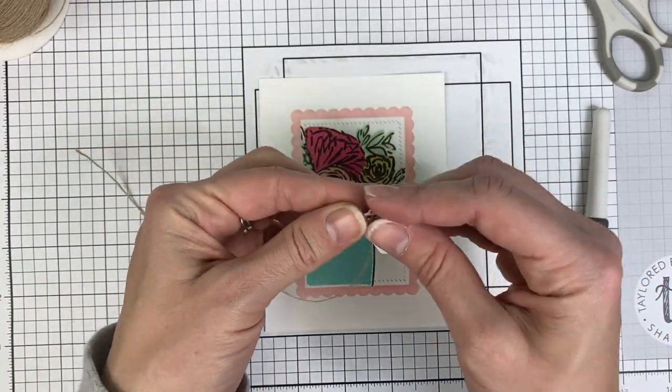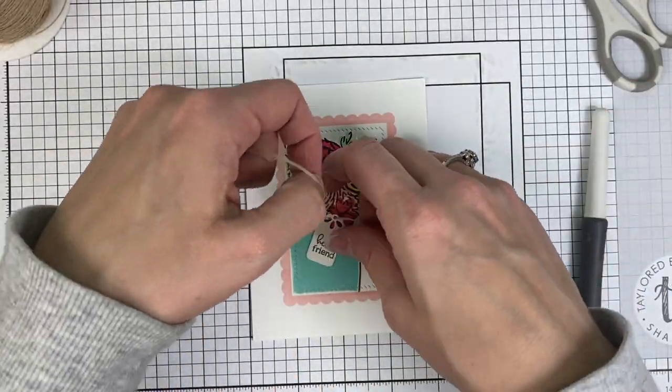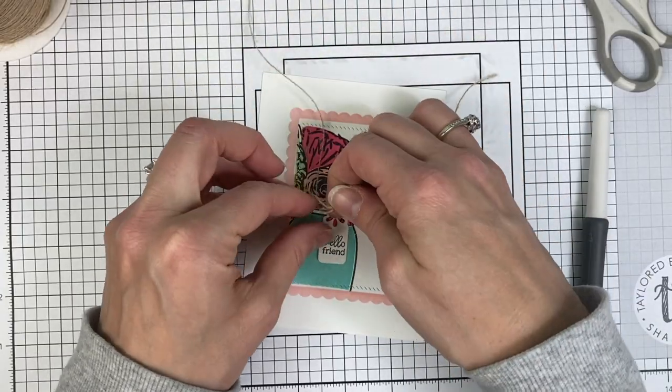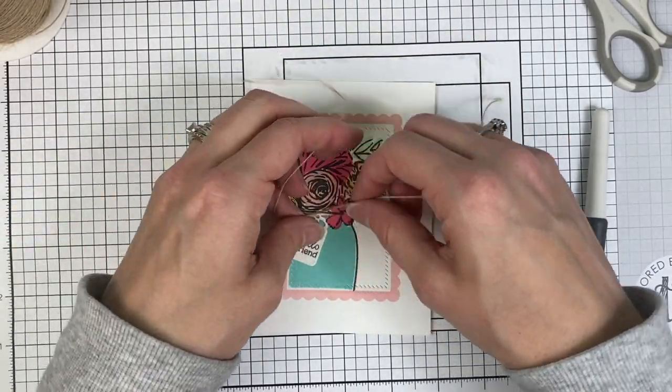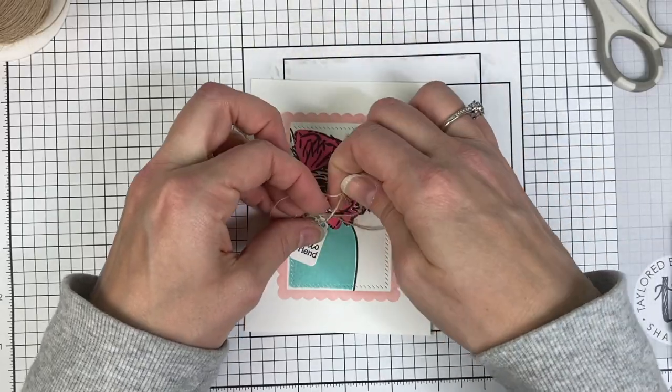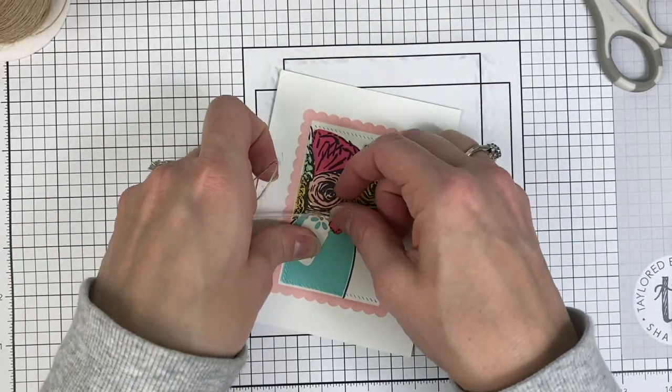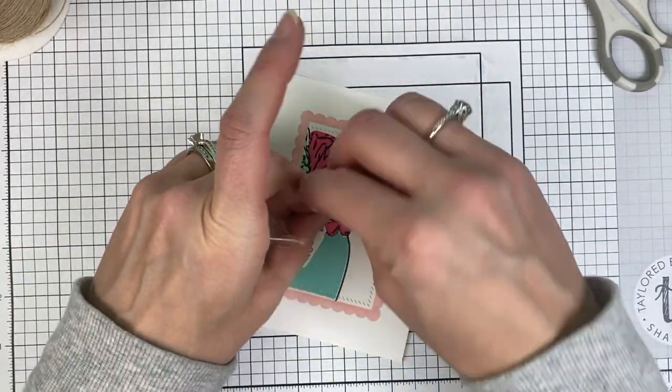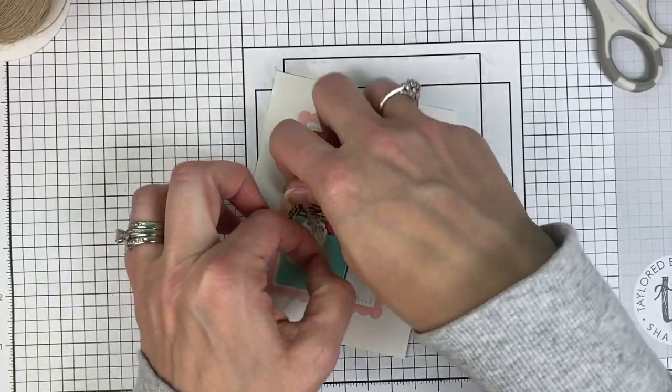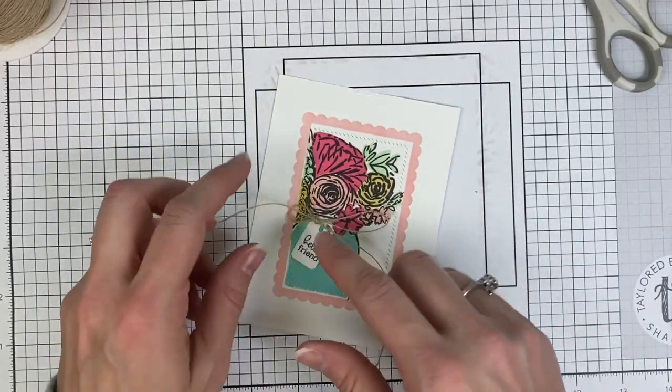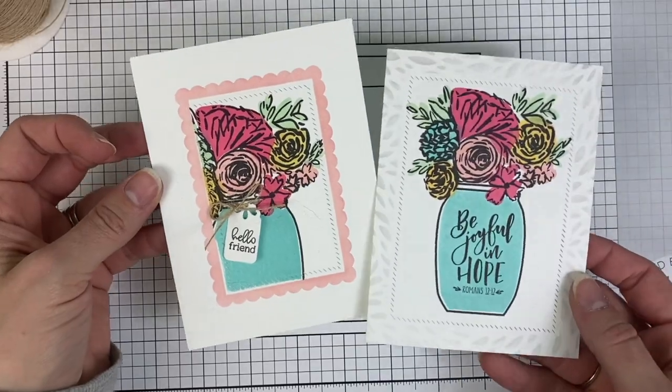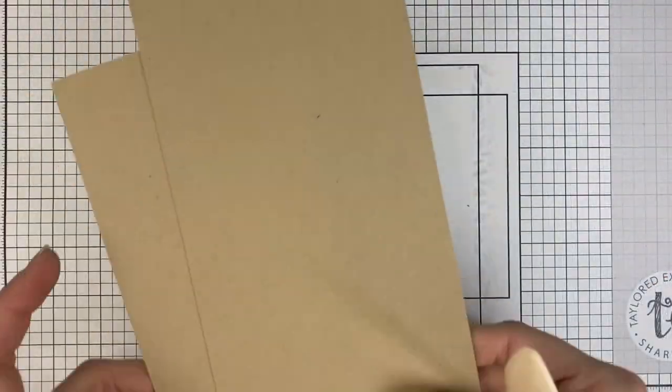The sweet little tag adds a lot of dimension to this really simple project. With the Itty Bitty Sentiments stamp set, you have over 40 sentiments to choose from, so you have something for just about any occasion. I went with the 'Hello Friend' because that's always something I can use in my stash. After adjusting the bow, I trimmed the ends, and you can see how both of those card panels turned out.